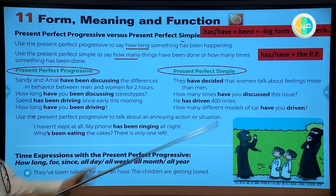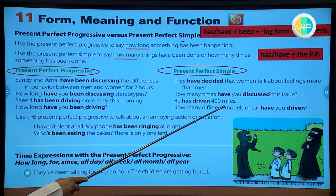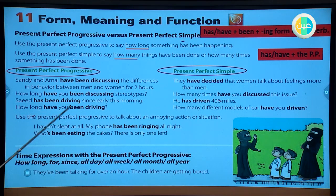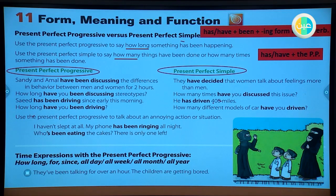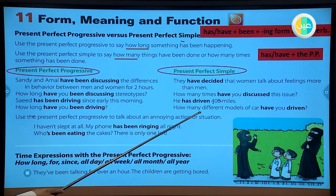We talk about how many miles using the present perfect simple, but 'since early morning' refers to time, so we use the present perfect progressive. We use it for time, and the simple for how many miles or countable things. 'How long have you been driving?' is a question about time. 'How many different models of car have you driven?' is about the number of models.